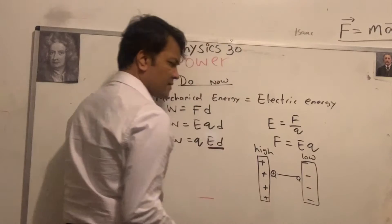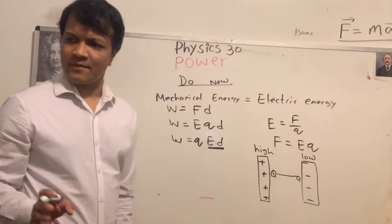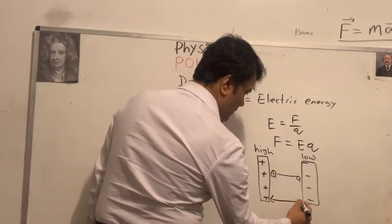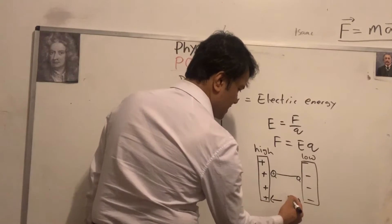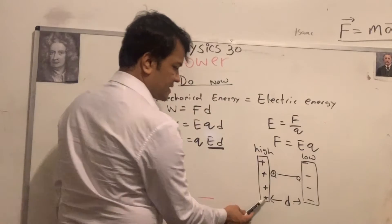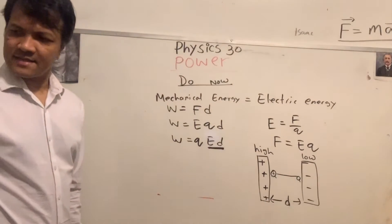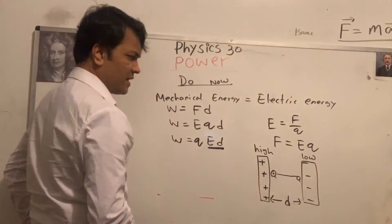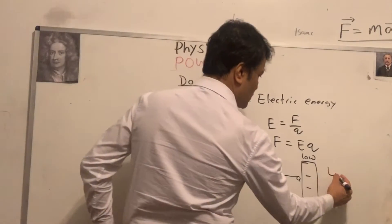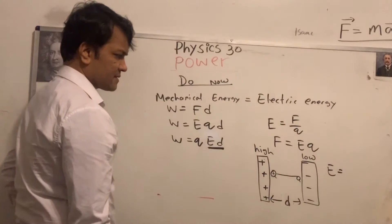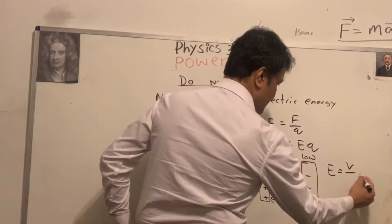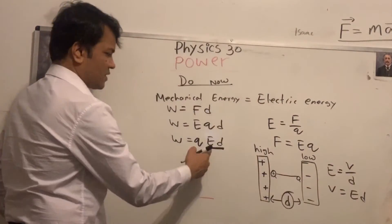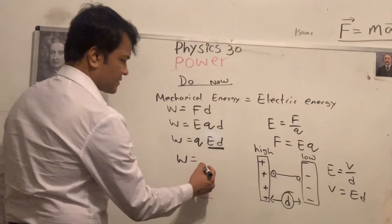Moving the charge to the negative side gives high kinetic energy and low potential energy. The distance d is from the positive plate to the negative plate. The electric field E equals voltage over distance: E = V/d, so V = Ed.